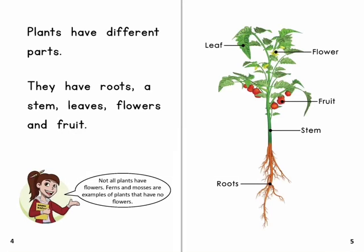Plants have different parts. They have roots, a stem, leaves, flowers and fruit.